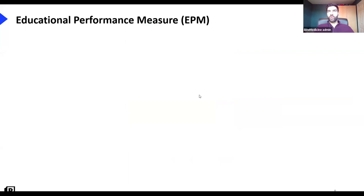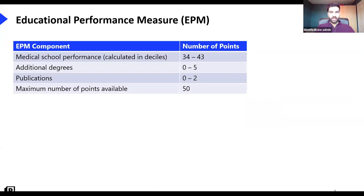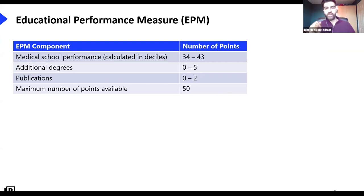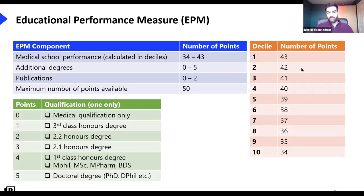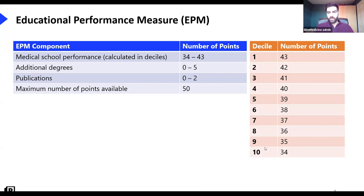How is the EPM actually calculated? Your medical school performance is based on what decile you rank in. Your medical school will give you your decile ranking — if you come in the top decile you automatically get 43 points, and if you come in the bottom decile you'll get 34 points. So top decile 43, bottom decile 34, and anywhere in between you'll get the appropriate number of points according to your decile.